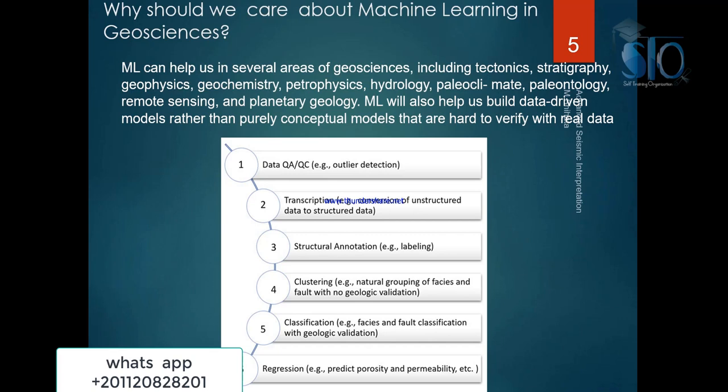Why is machine learning important for geology, geophysics, or geoscience? Because we usually have a huge amount of data and analysis of this data is difficult for humans. We need software to help us predict data, reduce analysis time, and predict facies and lithology.